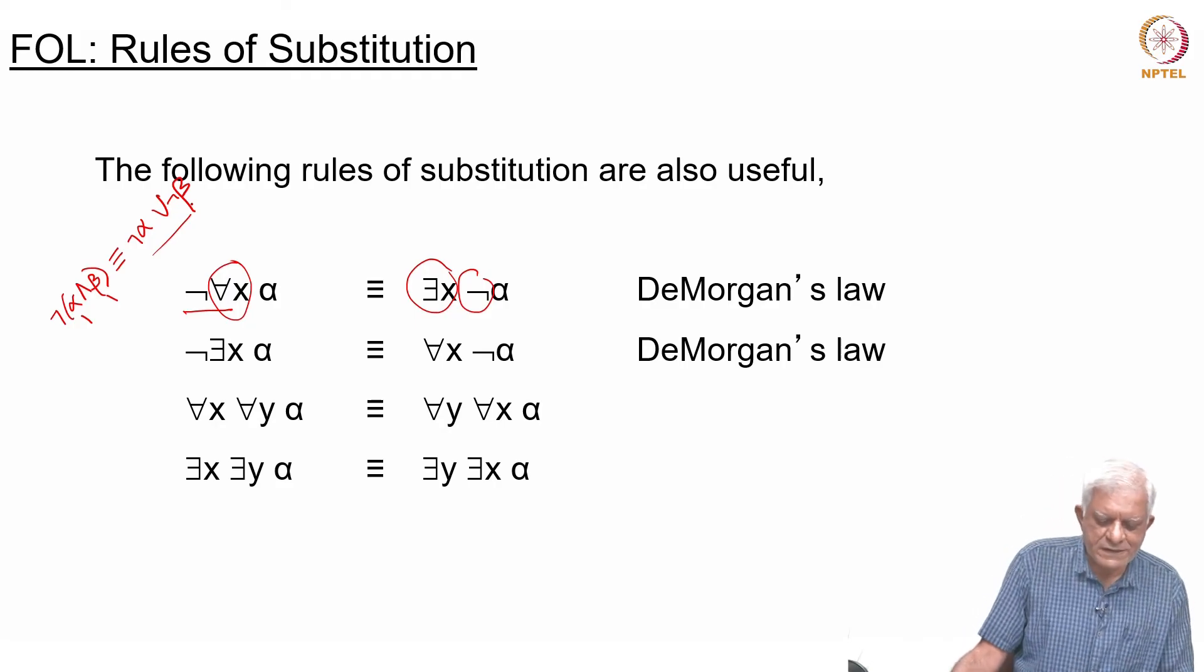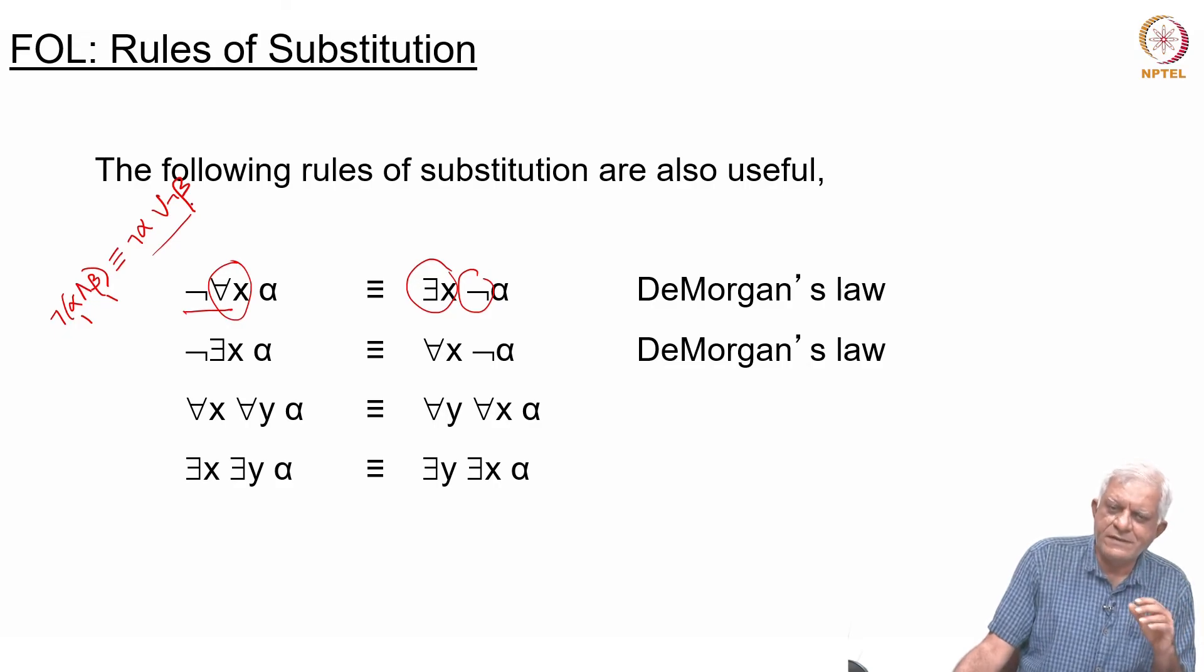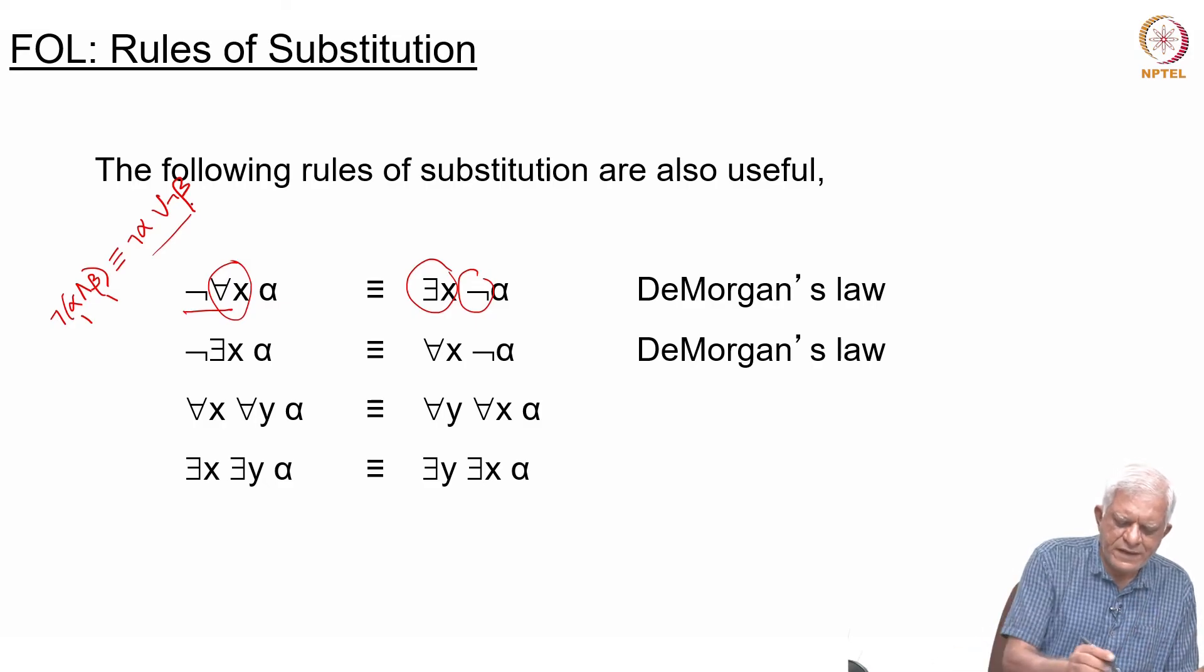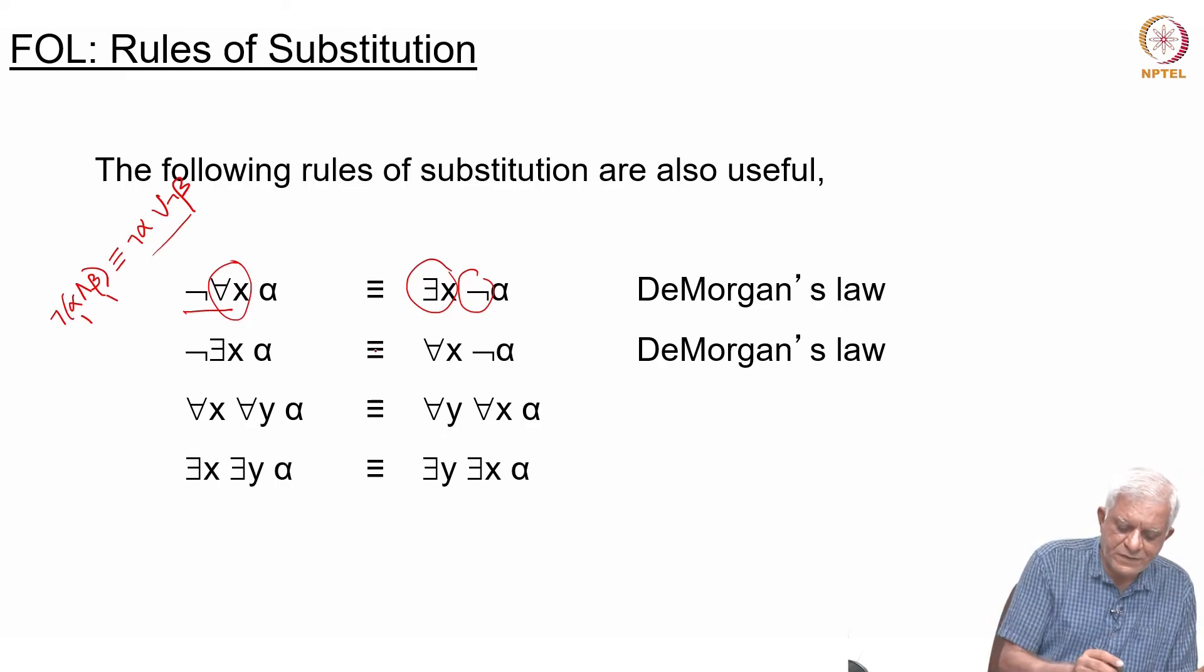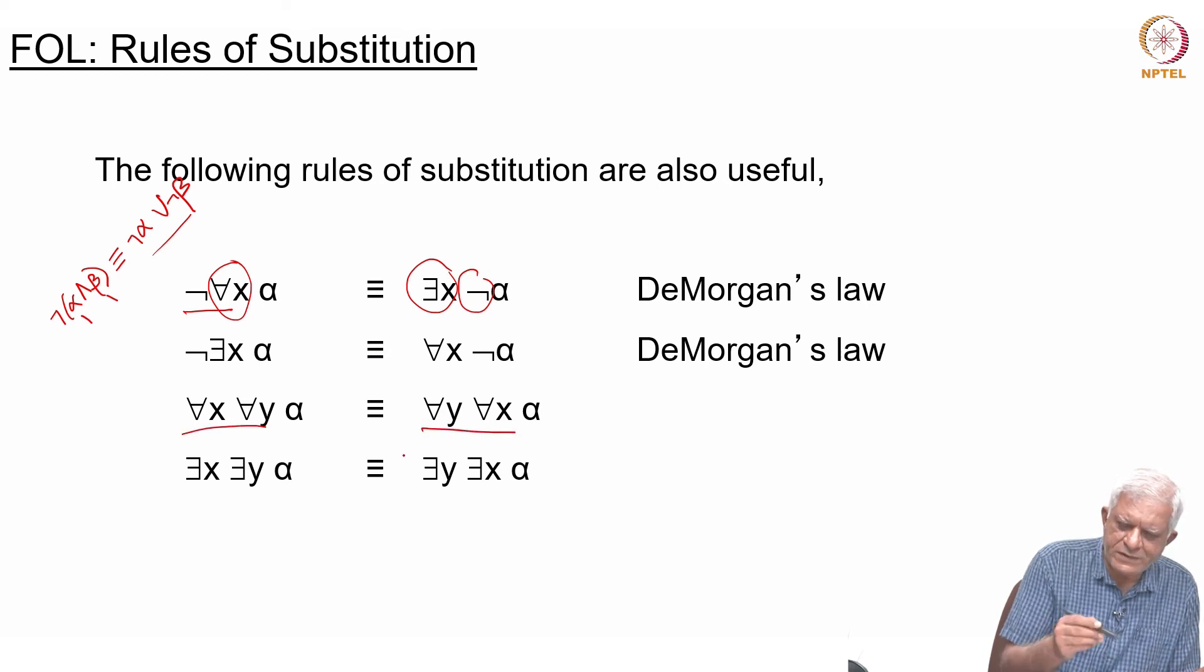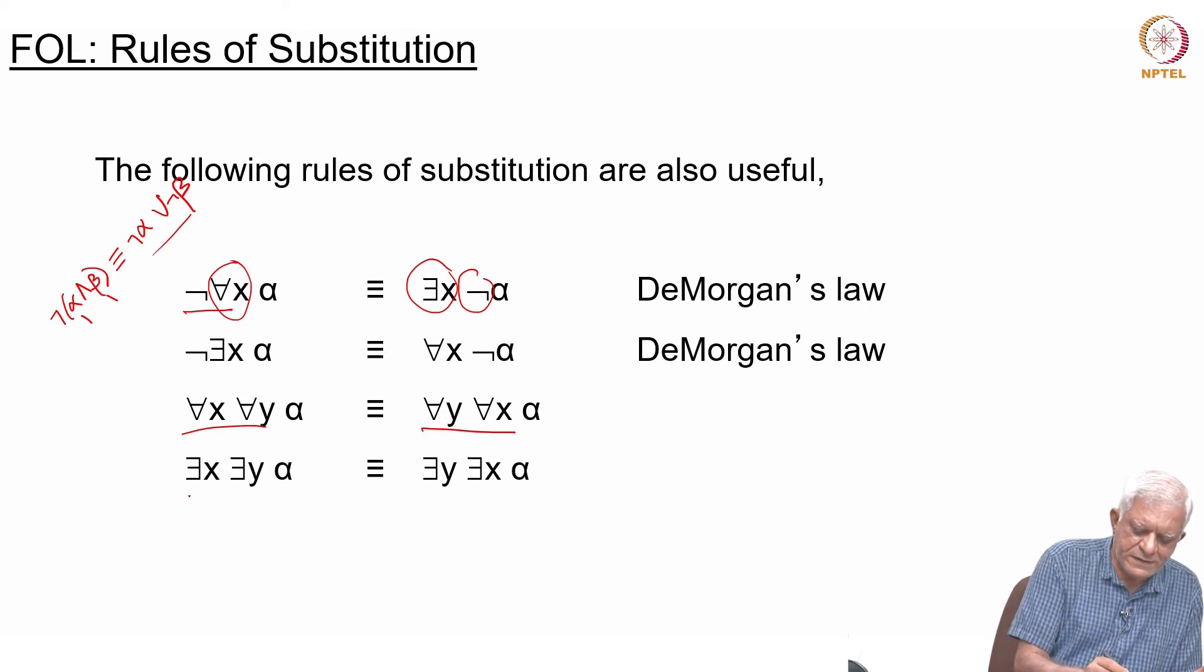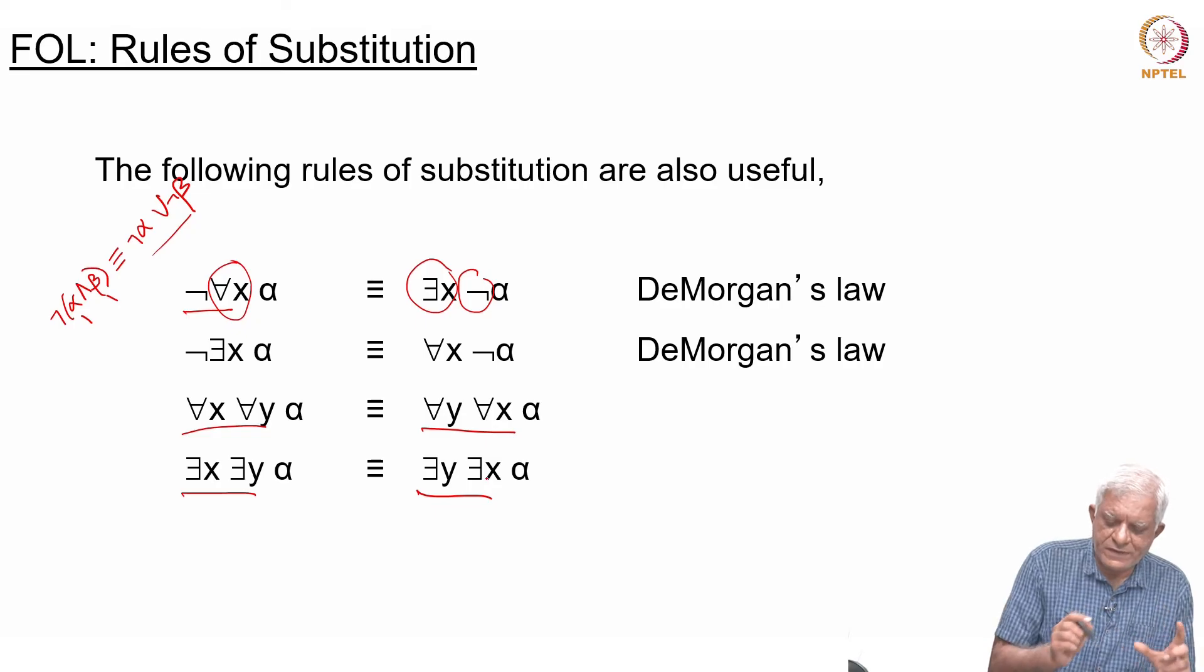It helps you think a little bit if you think of the universal quantifier as a generalized AND and the existential quantifier as a generalized OR essentially. And then of course, this De Morgan's law will become easy to understand. The other ones are kind of commutative laws, which say that you can change the order of the quantifiers—it does not matter—for either of the two quantifiers.